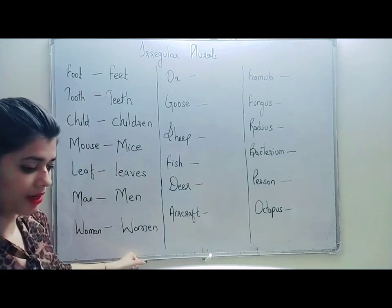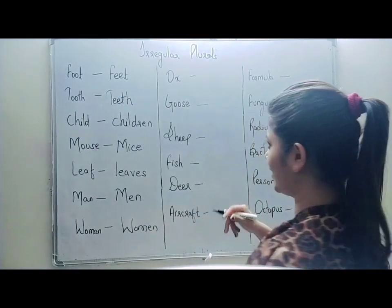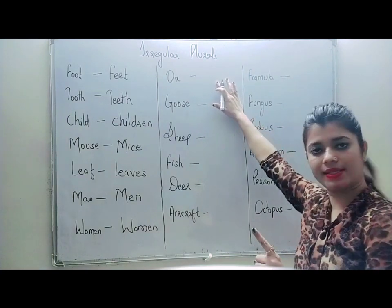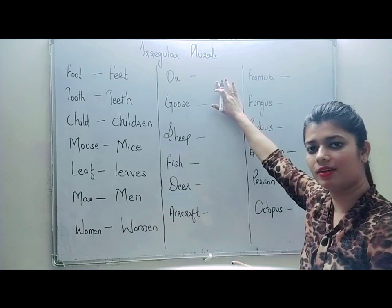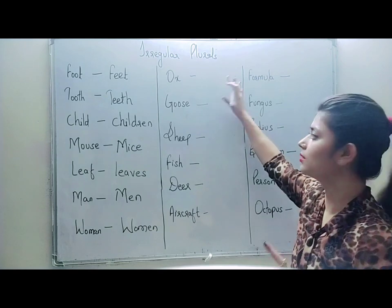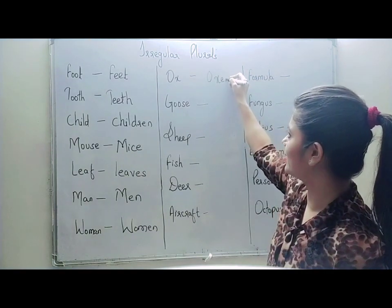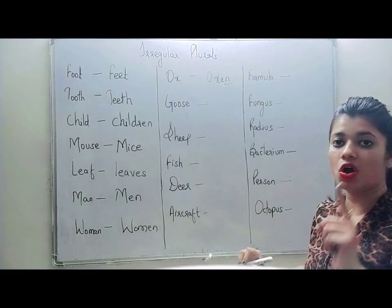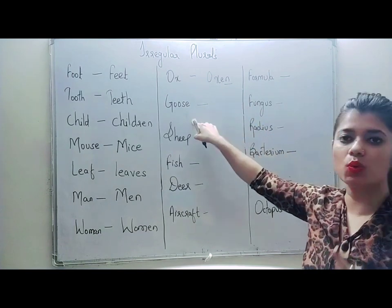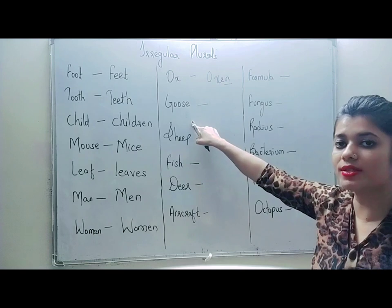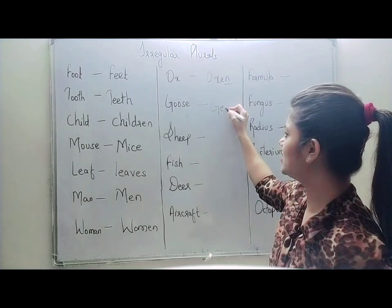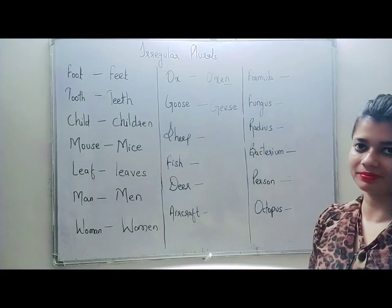These are still manageable, but now we move to a tougher category. The word is ox. If there is one ox, you say ox. But if there are more, it will not be oxes — it will be oxen, O-X-E-N. Not oxens, just oxen. Next is goose, which is an animal. The singular is goose and the plural is geese, G-E-E-S-E.